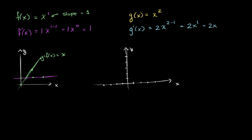So g of x: when x is 0, it's 0. When x is 1, it is 1. When x is negative 1, it's 1. When x is 2, it is 4 — that puts this right over there. When x is negative 2, you get to 4. It's a parabola — you've seen this for many years.